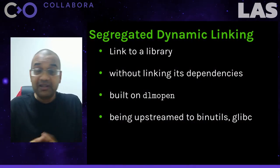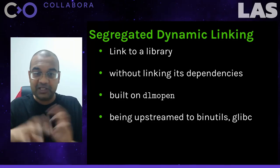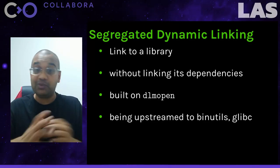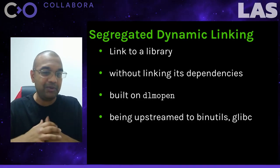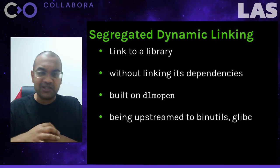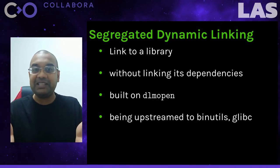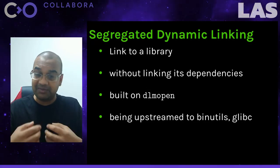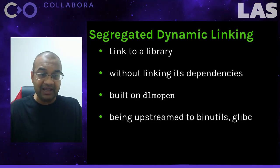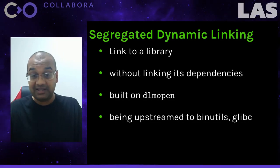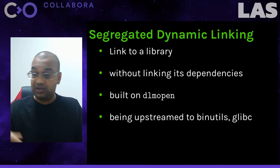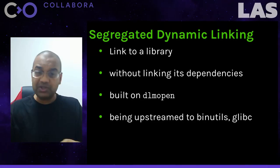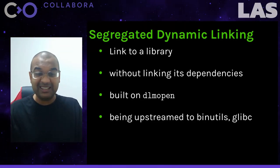Diving a little deeper into the containerization/runtime security rabbit hole, we find segregated dynamic linking. This is one of my personal projects. You probably haven't come across the phrase before — what does it even mean? Well, normally when you link to a library, you get symbols from that library, but the library pulls in its own dependencies as well, and you see the symbols from those dependencies. If a library depends on something you've already pulled in — a third library — it'll just use that instead. That's mostly what you want and is efficient and generally the right thing to do.